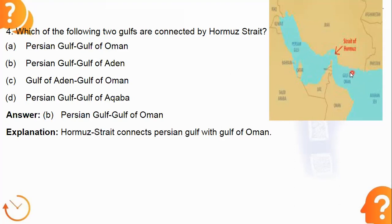A strait is a narrow passage of water connecting two seas or two different large water bodies. The Strait of Hormuz is a narrow water body connecting the Persian Gulf and the Gulf of Oman, so it is called a strait. Please remember this — it is frequently in the news.